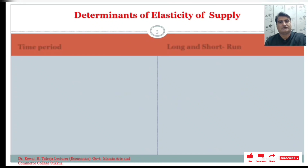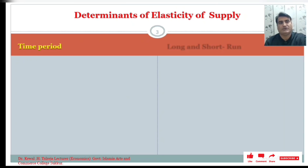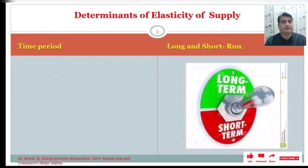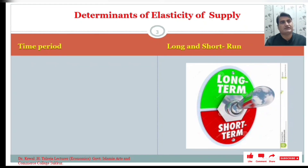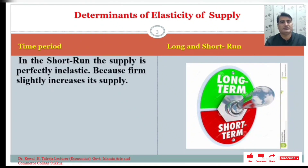The first factor that affects the elasticity of supply is the time period. In economics the time period is the long run and short run. The short run is the period during which the firm has no choice to shift from one place to another, or install new machinery or plant, but can increase its output by changing variable factors while keeping fixed factors fixed. So in the short run the supply is perfectly inelastic because the firm can only slightly increase its supply.